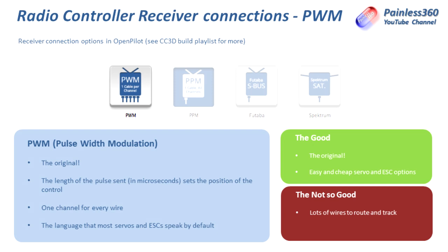PWM works brilliantly on craft that don't have a flight controller, such as flying wings and planes where you don't want a NAZA, CC3D, APM, Pixhawk, or similar in the middle as a brain. You can plug the servos and speed controllers directly into the receiver. The elevator servo plugs into the elevator channel, aileron servo into the aileron channel, and the ESC and motor into the throttle channel. There is one channel for every wire, which is how it was originally designed.